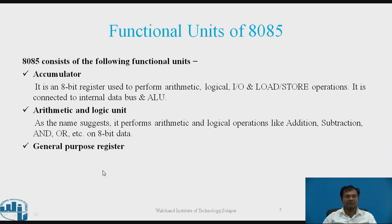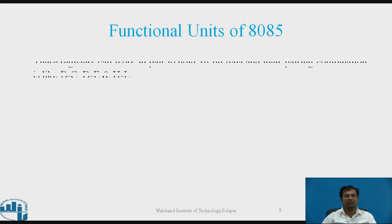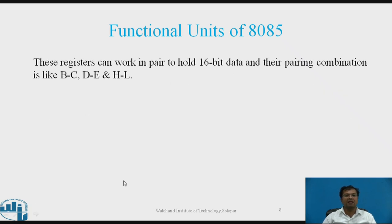The general purpose registers are B, C, D, E, H, and L. Each register holds 8 bits of data. These registers can work in pairs to hold 16-bit data, and their pairing combinations are BC, DE, and HL.